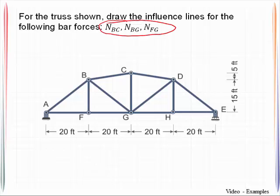BC, BG, and NFG. That would be these three bars. And so what becomes obvious to us here is using the method of sections will get us those quantities the quickest.